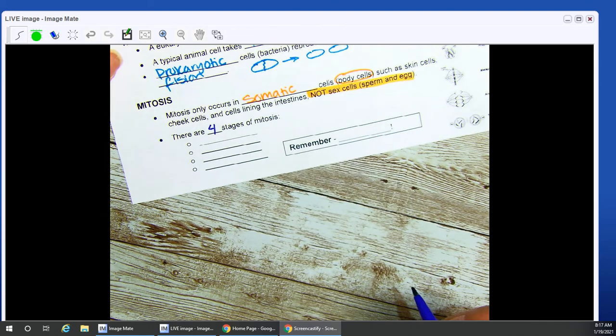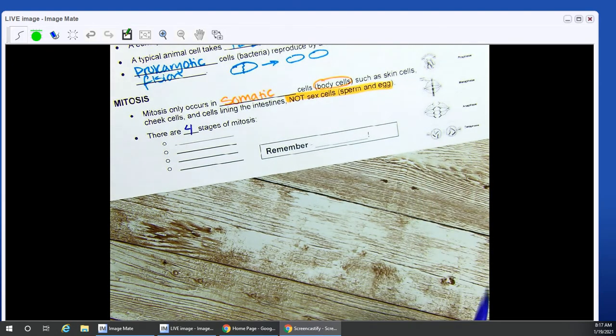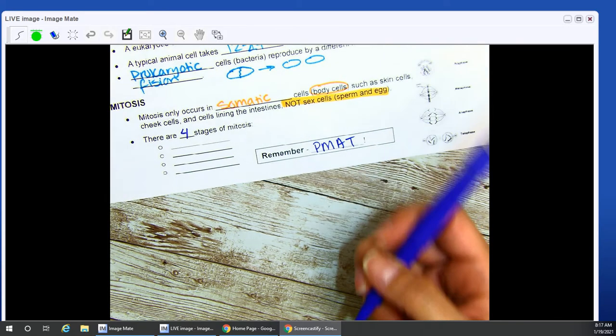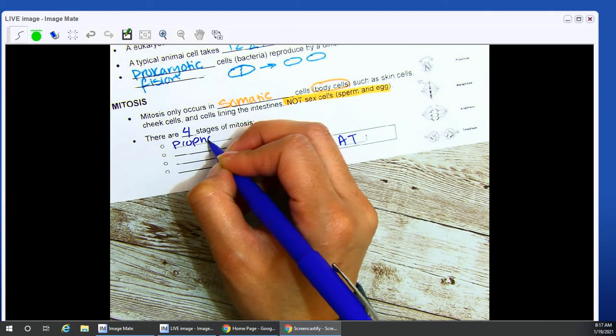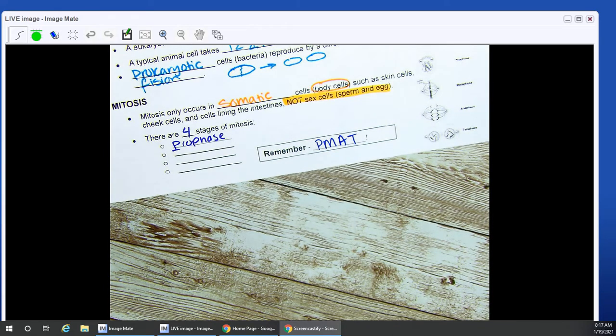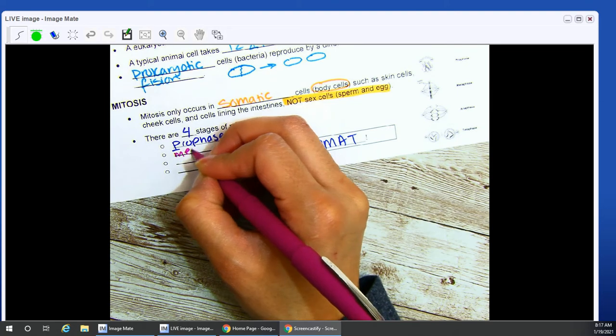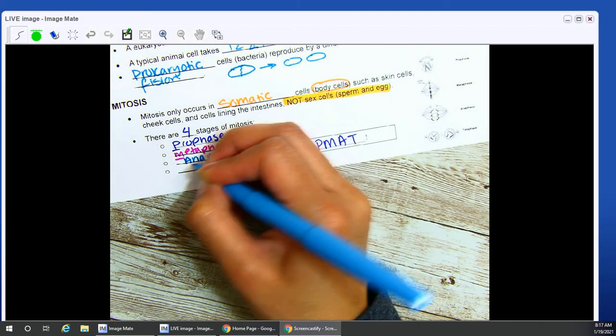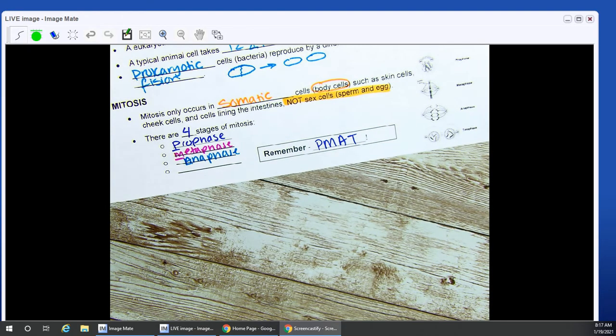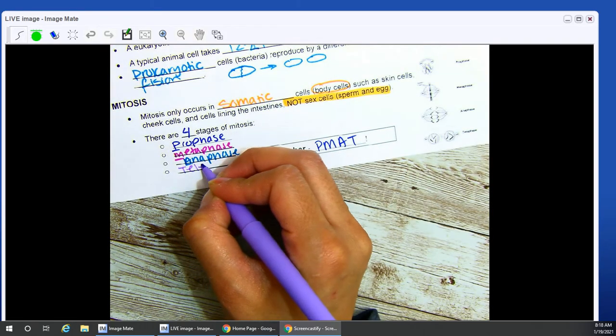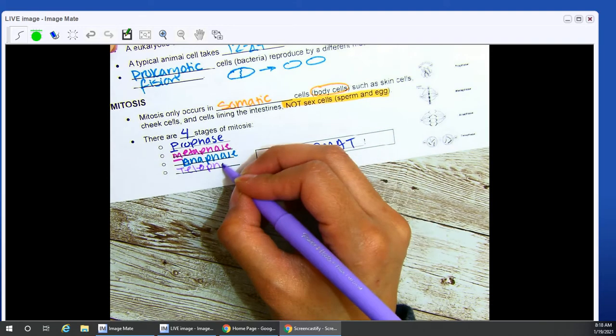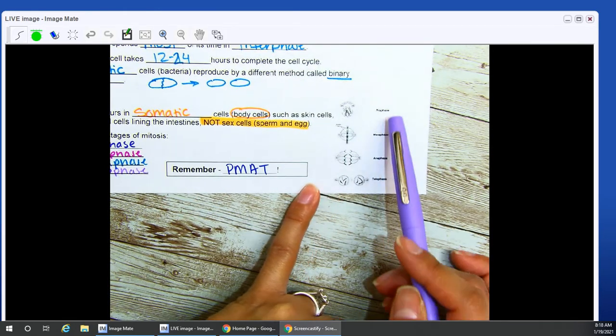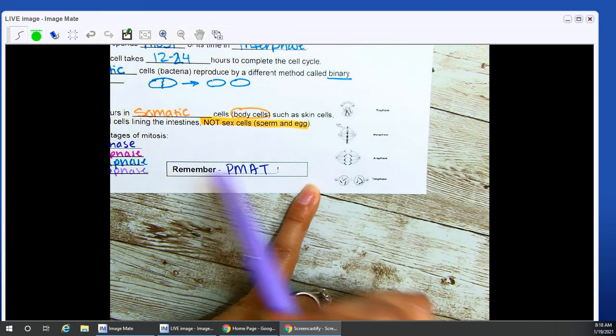There are four stages of mitosis. And they're actually here on the right-hand side. These are the doodles here. We're going to remember them using PMAT. P is for prophase. M is for metaphase. A is for anaphase. And then last but not least, T is for telophase. So let's take a look at these little doodles here on the right. Prophase, metaphase, anaphase, and telophase, as we had written over here on the left.